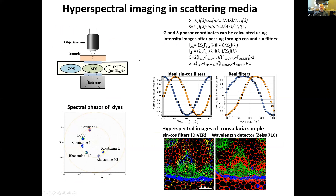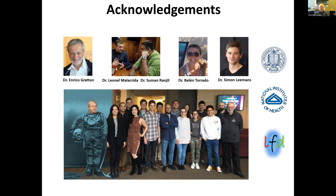In conclusion, we can also do hyperspectral imaging with the DIVER using special sine, cosine, and linear filter techniques. This will be covered in more detail in a subsequent talk, but the key point is that because the DIVER microscope can do imaging in scattering media, combining it with this technique allows hyperspectral imaging in highly scattering media — which is a non-trivial capability and a very nice feature of the DIVER. And that's basically everything I wanted to talk about.